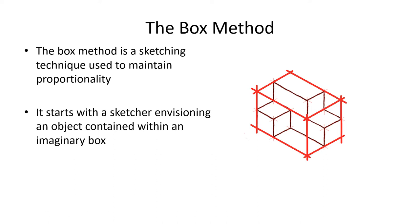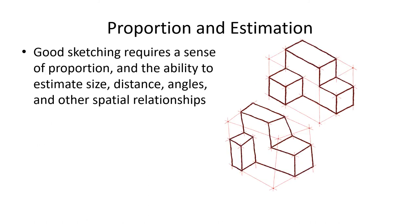So the box method we talked about before. This starts with a sketcher envisioning an object contained within an imaginary box. This will help you with proportion and estimation. So you want your picture looking like that. They drew the object first without the box, like you might try to do. And then they drew the box after. And look at that. Is that a nice cube? I don't think so. It's like the proportions are all out of whack. So instead, if you draw the box first, it'll help be a guide for where lines are supposed to be.